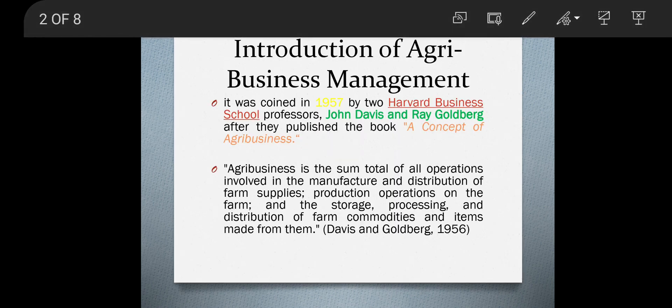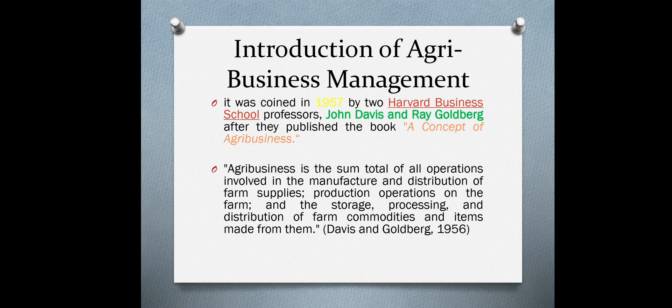Agriculture is the backbone of India and it has existed for a very long time. The term agribusiness management was coined by John Davis and Ray Goldberg in their book 'A Concept of Agribusiness.' Davis and Goldberg were professors at Harvard Business School in 1957, and in that book they first introduced the term agribusiness.